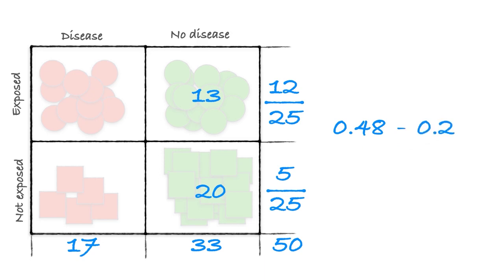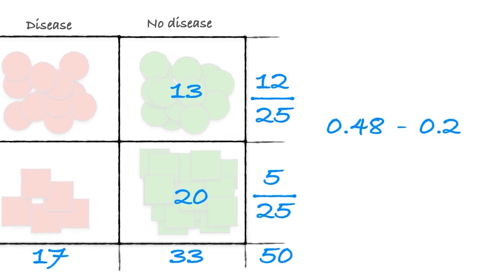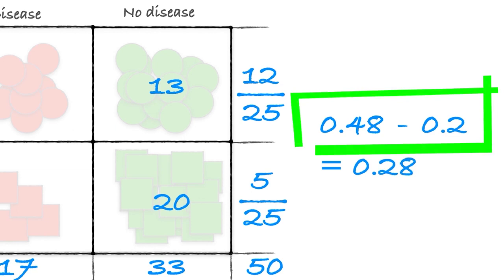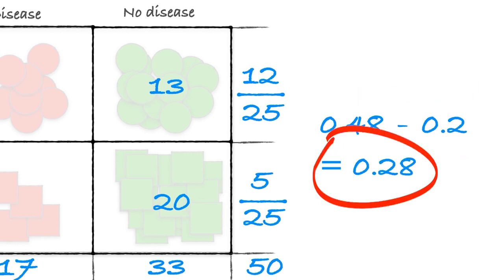So you can also look at the difference between these two groups. If you subtract the 0.2 from the 0.48, you get 0.28. This is the excess risk or the attributable risk. And let me explain to you what that means.